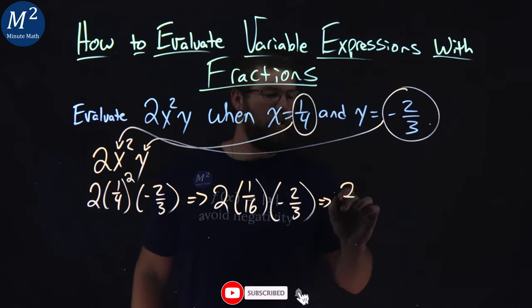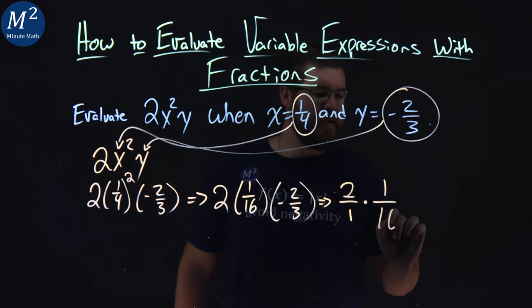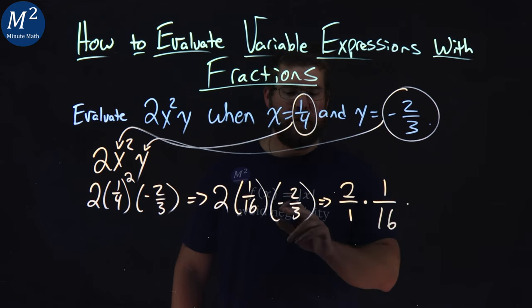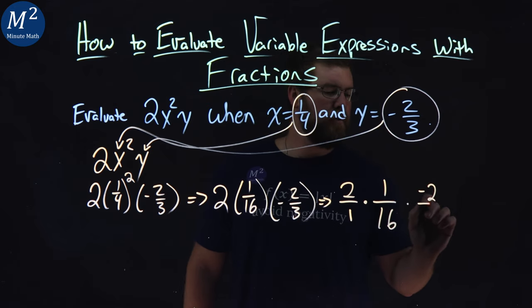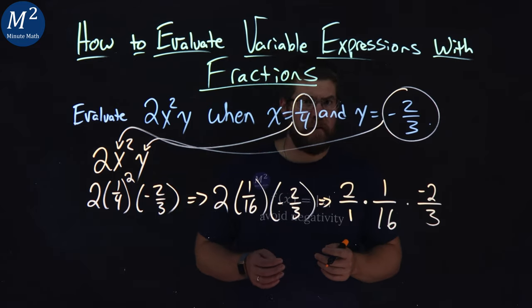If I rewrite this, 2 as 2/1, times 1/16 is 1 over 16, times—let's put a negative in the numerator—2/3. This becomes a little easier to see to cross some things out.